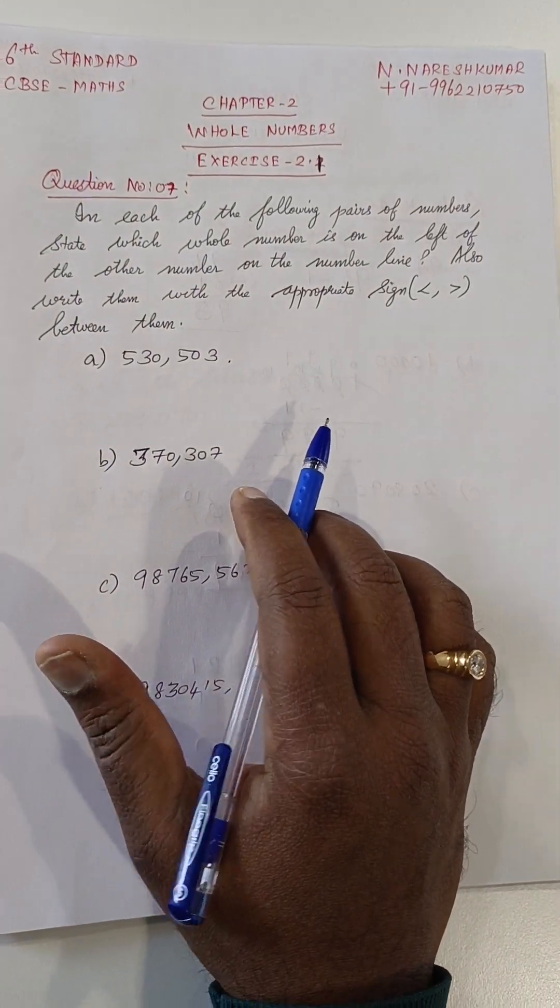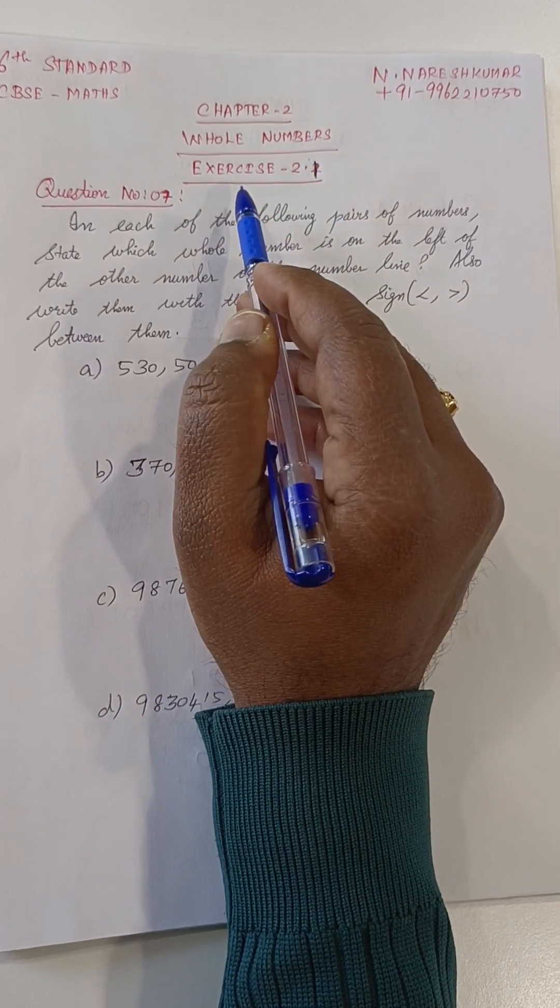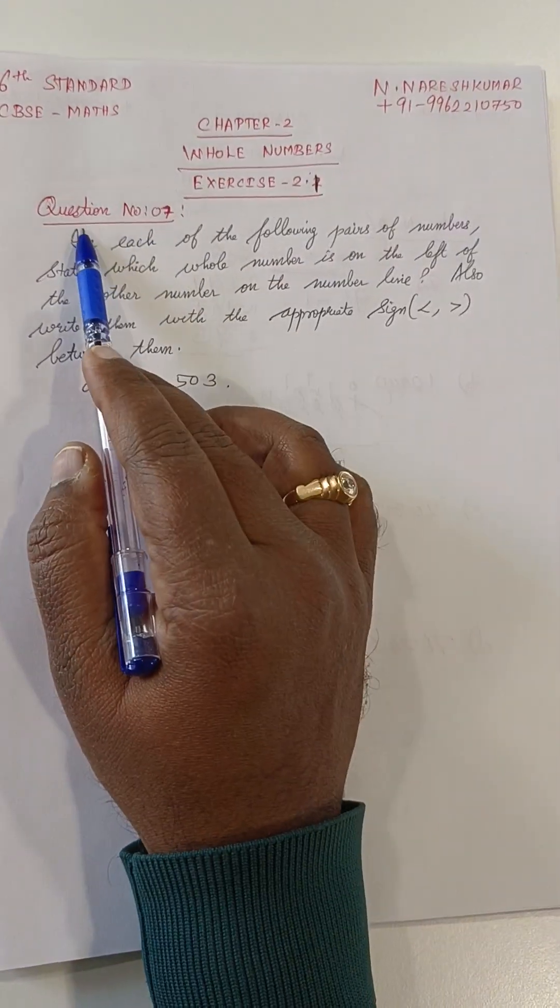Six Standard CBSE Board, Chapter 2, Whole Numbers, Exercise 2.1, Question Number 7.